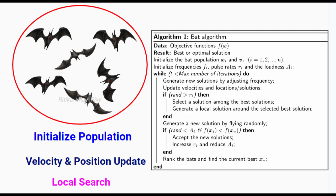First, we initialize the position — we have a population of bats, and each bat represents a potential solution with a random position. We randomly initialize the position and velocity. Second, we update the position and velocity. After that, we perform local search. Then selection is performed — the algorithm selects the best solution based on the objective function values. This process continues until the stopping condition is met, such as the maximum number of iterations.